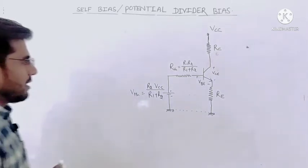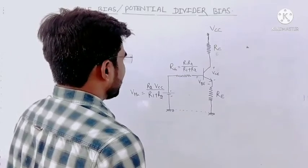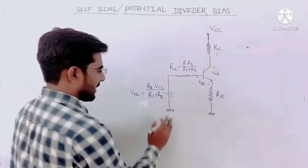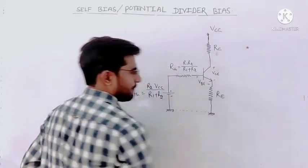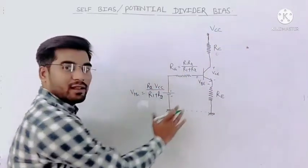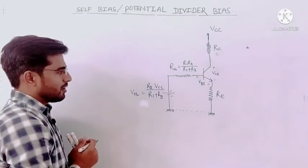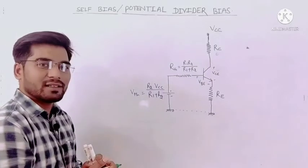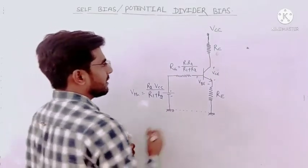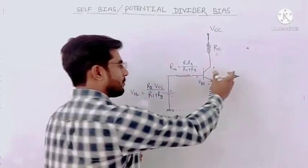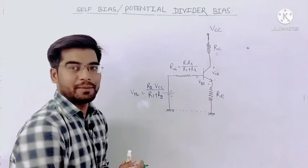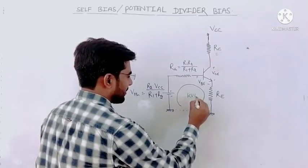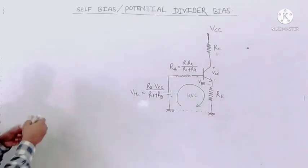Now we apply KVL. This is the input side and this is the output side. We will apply KVL on the input side first. With the help of input side KVL we can find out the current — meaning IB, IC, and IE. After that, we apply KVL at the output side to find out the value of VCE.